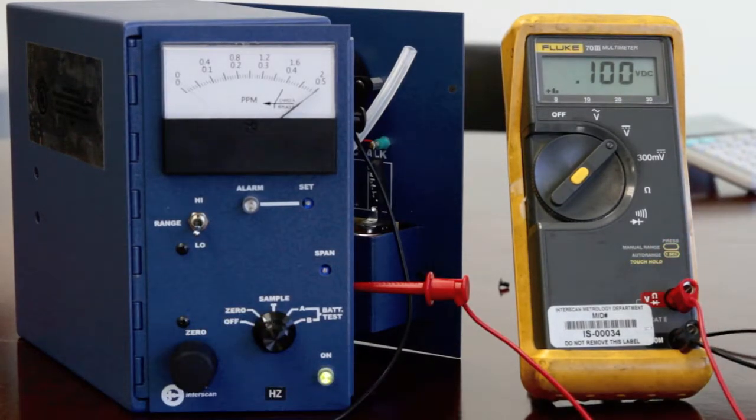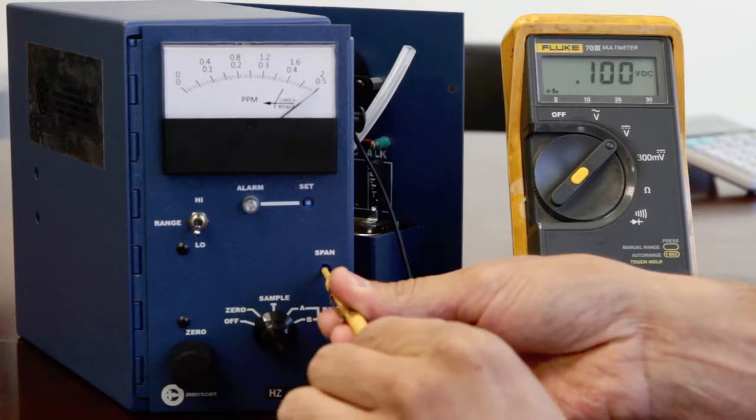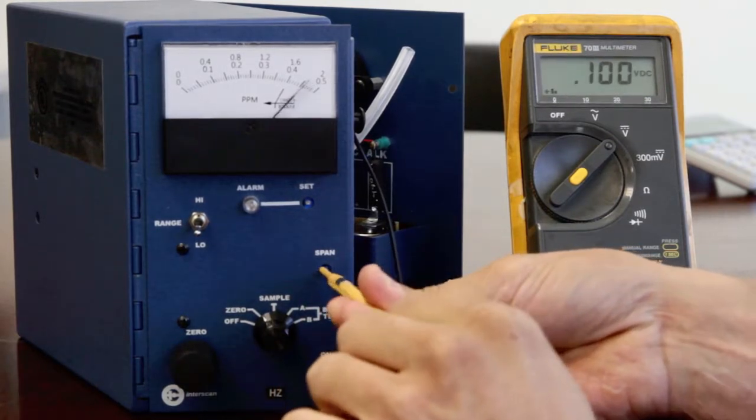Adjust the span control so that the analyzer meter, not the digital voltmeter, reads 0.25.